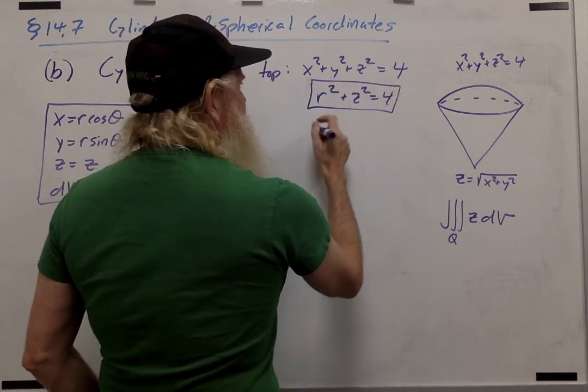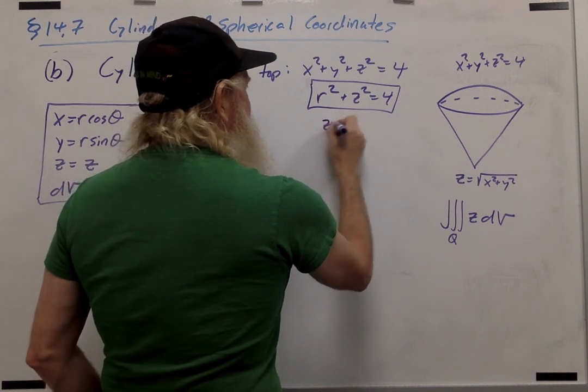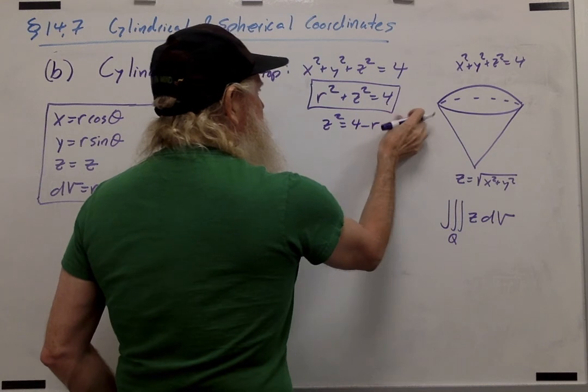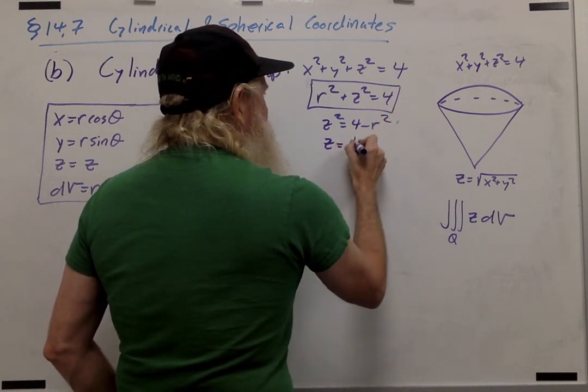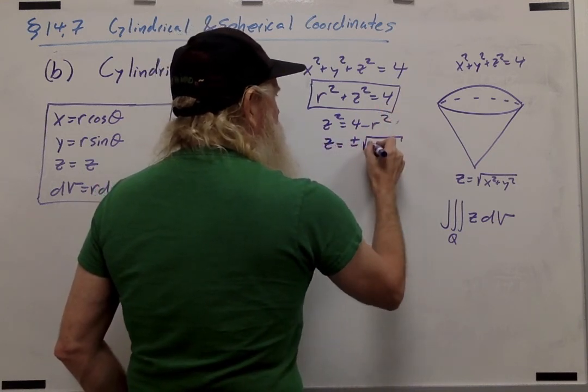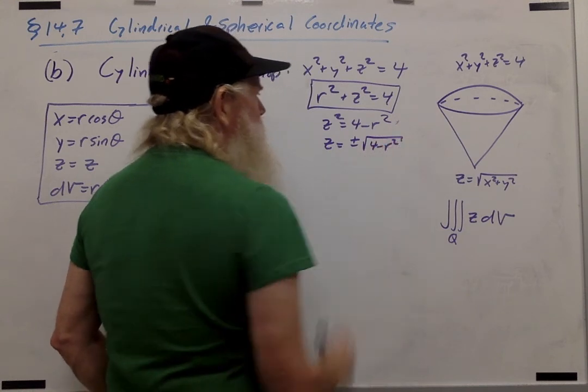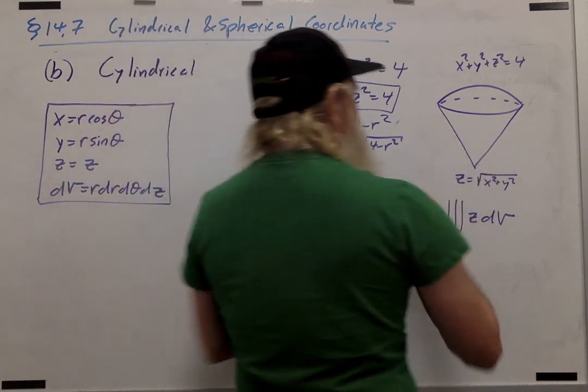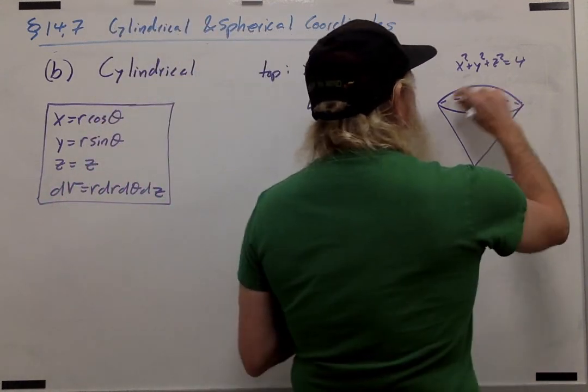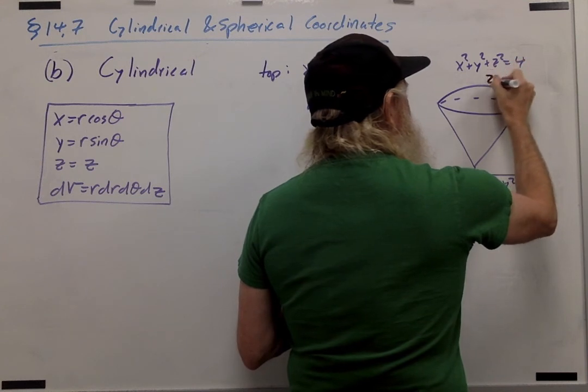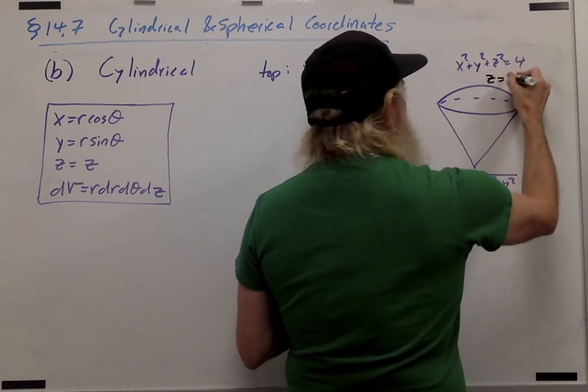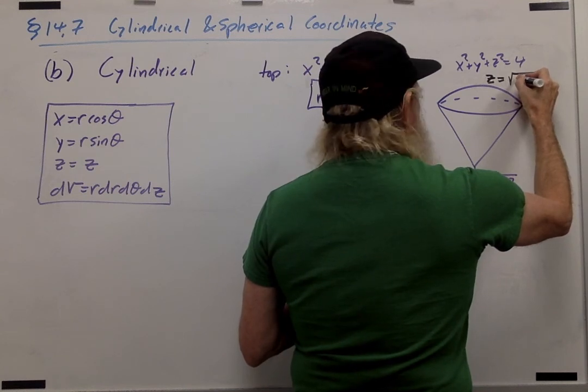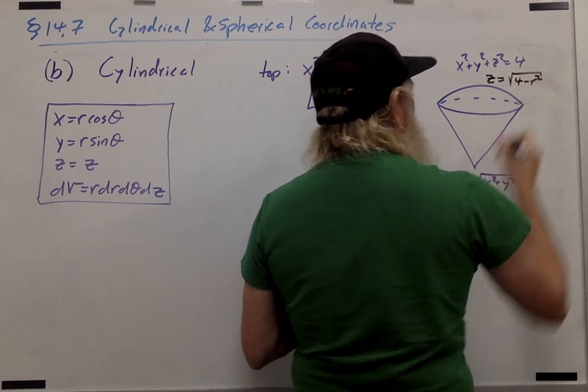We can also solve for z to say that z squared is 4 minus r squared. So z is plus or minus the square root of 4 minus r squared. Remember though that we're only taking the top half, so it would be positive. So I can relabel this top surface as z equals the square root of 4 minus r squared.